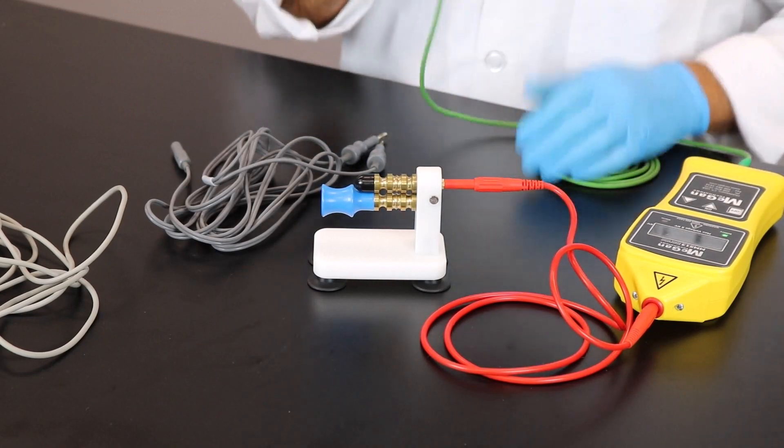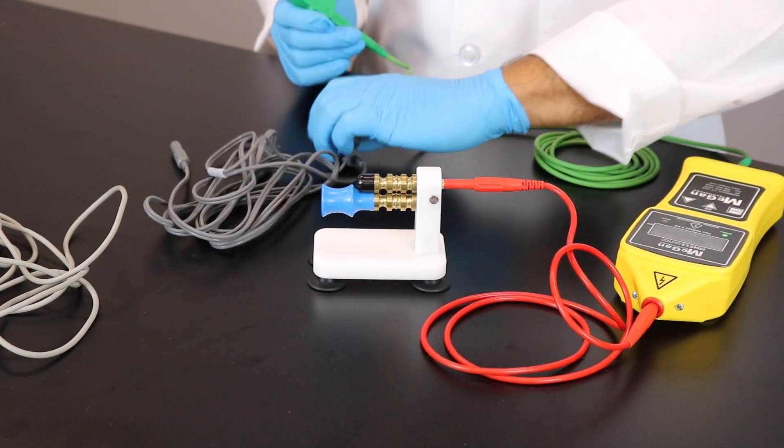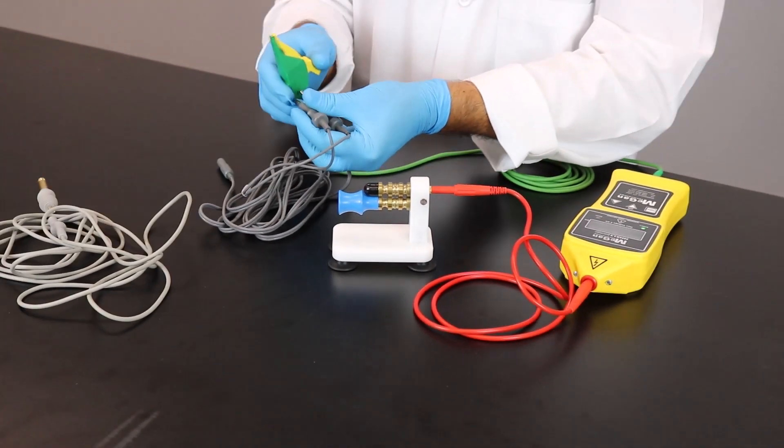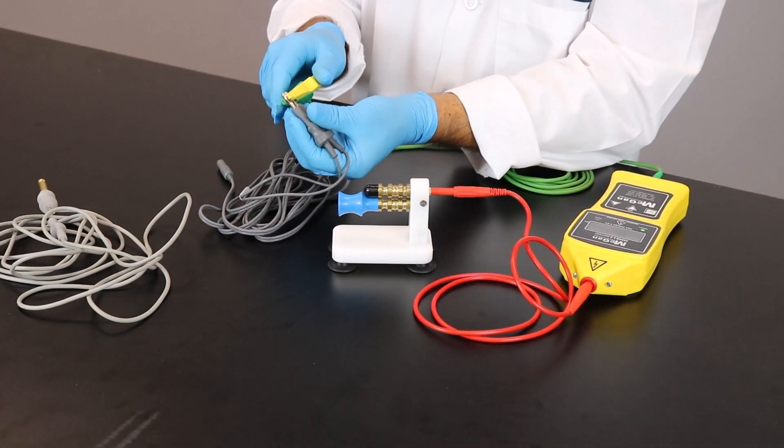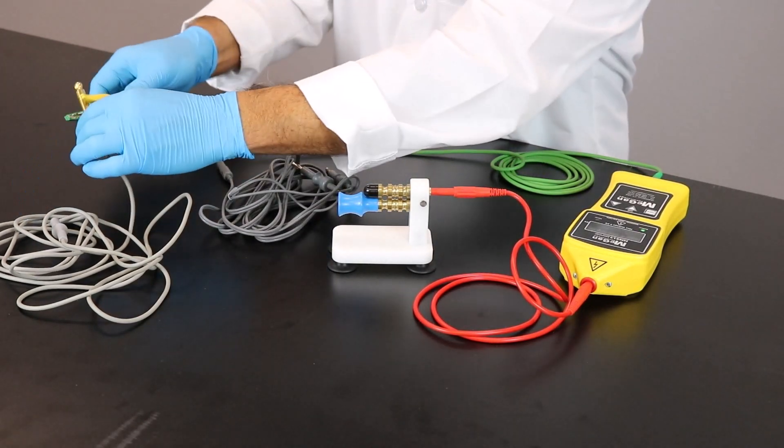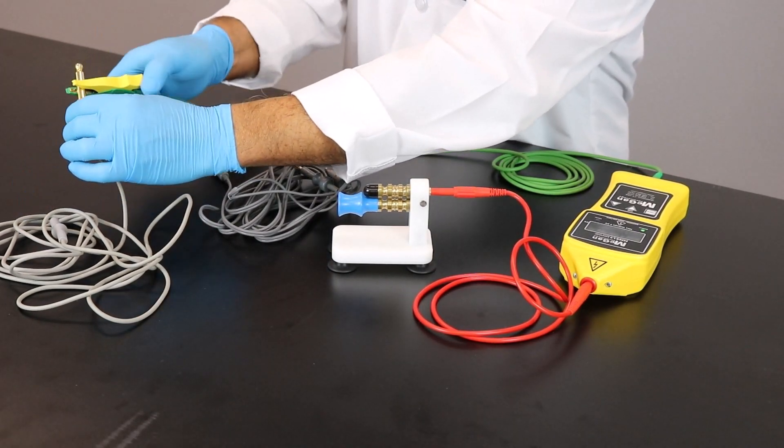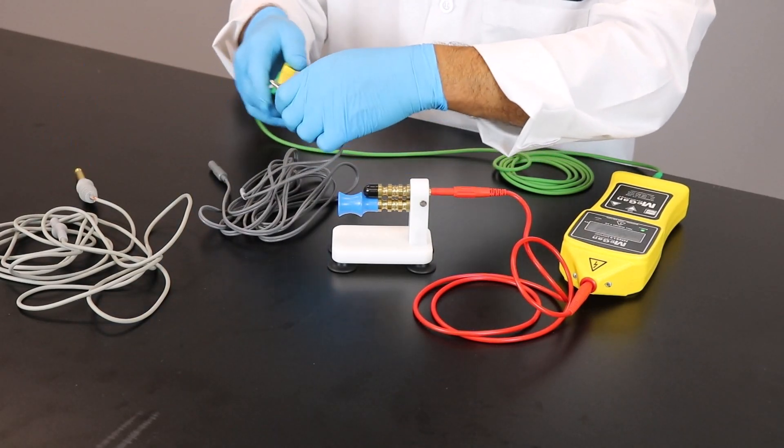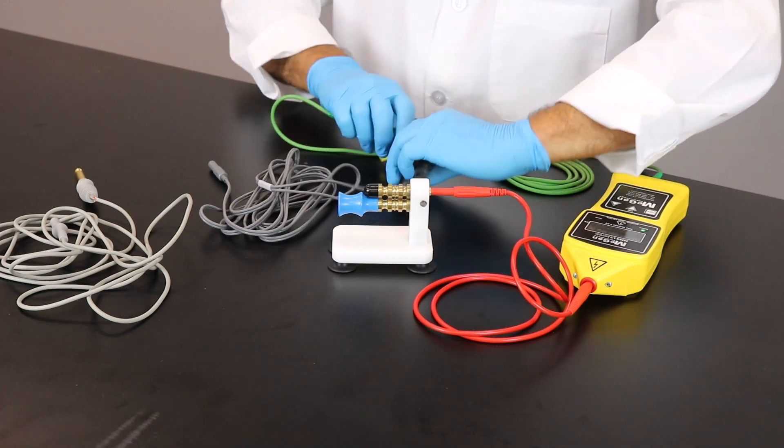One of the key things to remember is when you're grounding. If you're using a bipolar cord to test, you want to make sure that you ground both of the leads like so. If you're grounding the monopolar, it's as simple as that by just grounding that one piece.